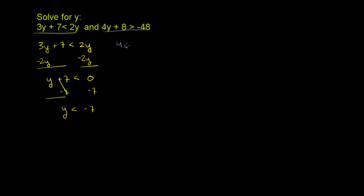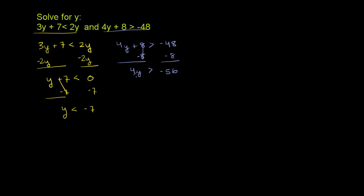Now let's work on this constraint. We have 4y plus 8 is greater than negative 48. So let's get rid of the 8 from the left-hand side by subtracting 8 from both sides. The left-hand side, we're just left with 4y, because these cancel out. 4y is greater than negative 48 minus 8. And we don't have to swap the inequality since we're dividing by a positive number.